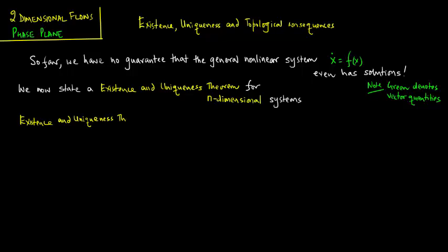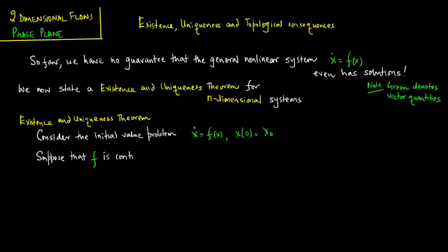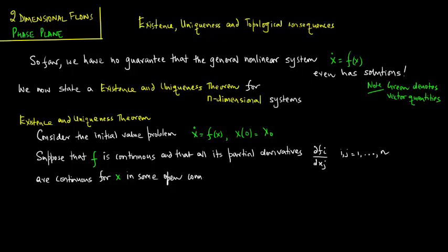The existence and uniqueness theorem states: consider the initial value problem x dot is equal to f of x where x of 0 is equal to x not. Suppose that f is continuous and that all its partial derivatives df_i to dx_j for i, j = 1 to n are continuous for x in some open connected set D in R^n.